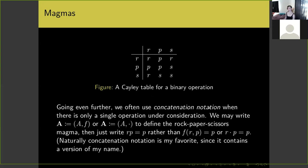Going even further, we often use concatenation notation when there is only a single operation under consideration, so we might write rp = p rather than f(r,p) = p or r·p = p. Because we know there's only one operation involved it doesn't make things confusing to just put symbols right next to each other. Concatenation notation is my favorite since it contains a version of my name — Charlotte Aten — we can see 'c-aten' in the word concatenation.